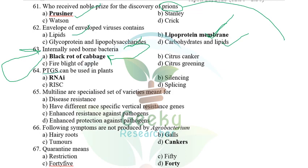PTGS (Post-Transcriptional Gene Silencing) is otherwise called RNA interference, co-suppression, and quelling. PTGS can be used in plants as RNAi (RNA interference).